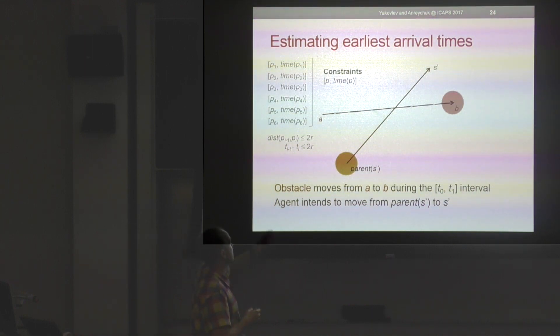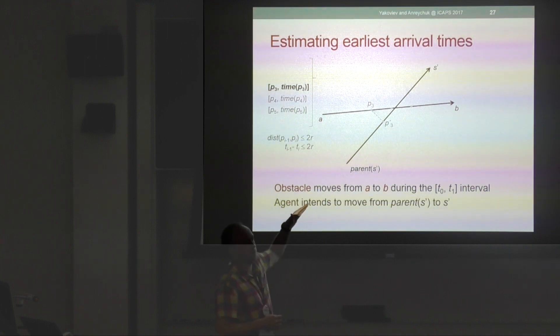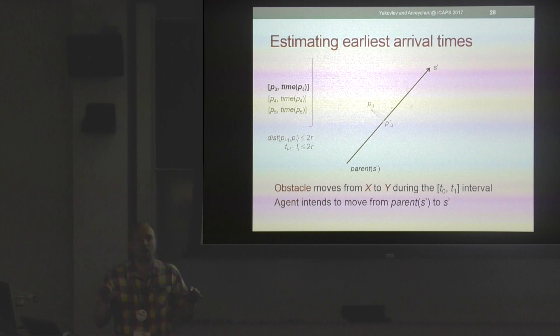We split the obstacle movement into points in the time-space called constraints, which are the tuples (p, time_p), and the distance between two consecutive constraint points doesn't exceed 2R by construction. We prune the constraint points which are too far away in space and cannot interfere with the agent, so we end up with what is called relevant constraints. For each such constraint, we also calculate the coordinates of the closest point, denoted with prime here, which lies on the agent's path. So we have a constraint point p3 and the closest point on the agent's path p3-prime. We can even forget now about how the obstacle actually moves because we look only at the constraints and work with them.